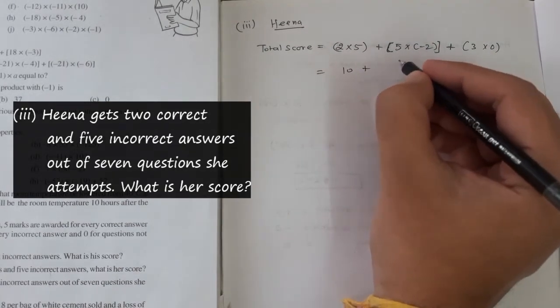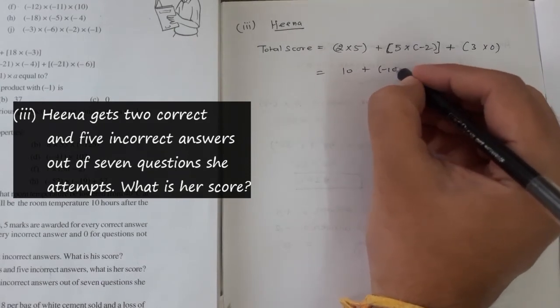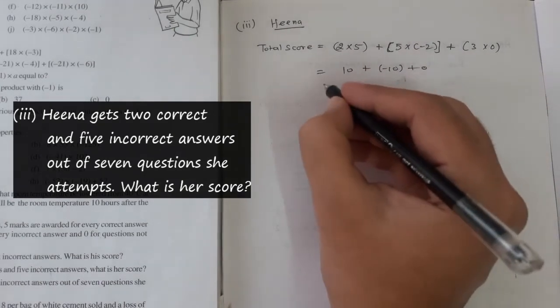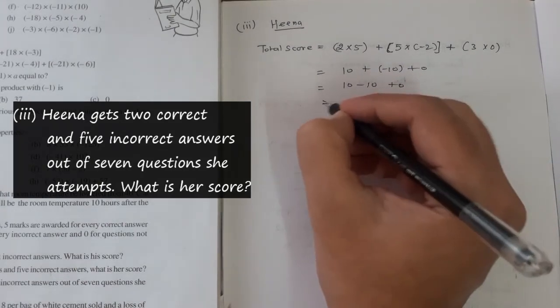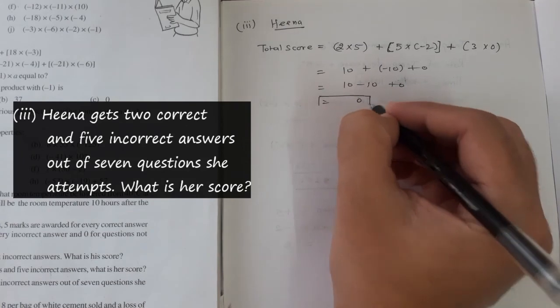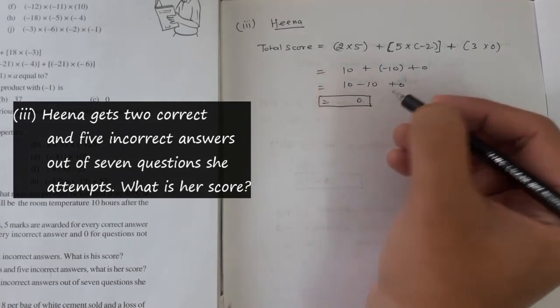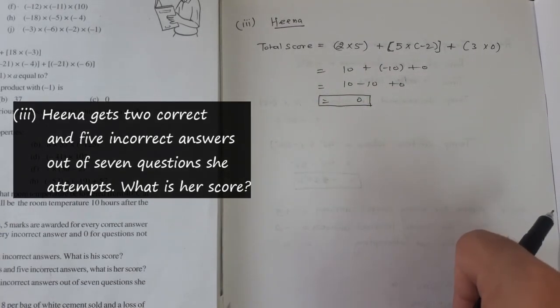That's 10 plus minus 10 plus 0. So 10 minus 10 plus 0, we get 0. So she hasn't scored anything. So that's it in this question.